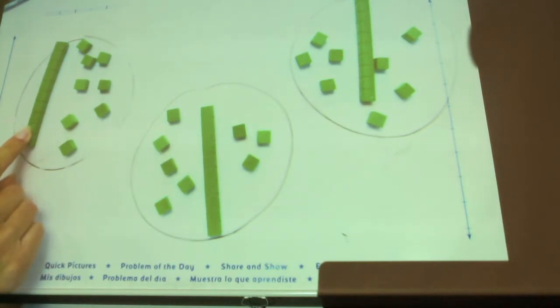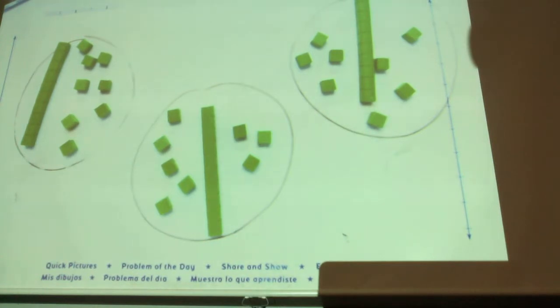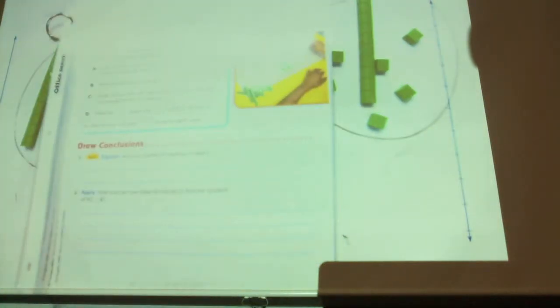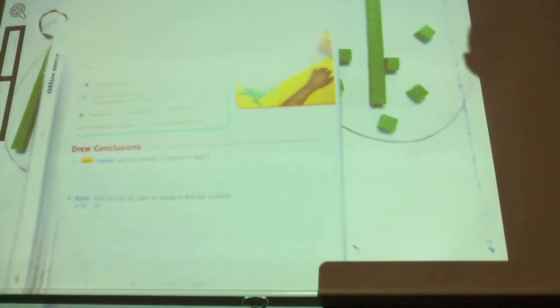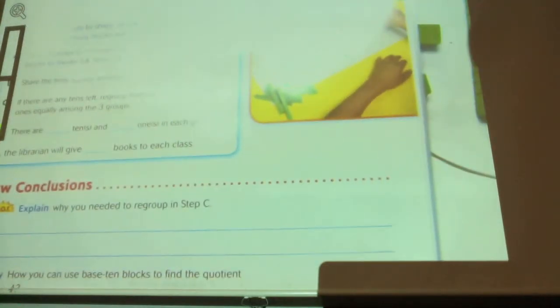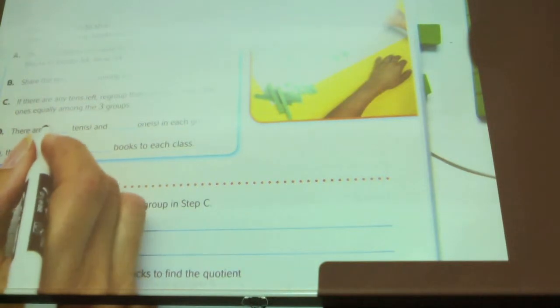Now I want you to count how many ones are in each circle and double check each circle to make sure. I double checked mine. Raise your hand when you know. Okay, how many ones are in each circle? Eight.